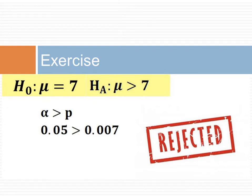We reject the hypothesis if the alpha level set for our confidence interval is higher than the p-value. In this case, it is. So with 95% confidence, we reject the null hypothesis that the observed sample came from a population with a mean of 7.